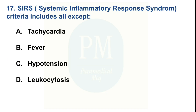SIRS (systemic inflammatory response syndrome) criteria includes all except — Option A: tachycardia. Option B: fever. Option C: hypotension. Option D: leukocytosis. The correct option is Option C — hypotension.